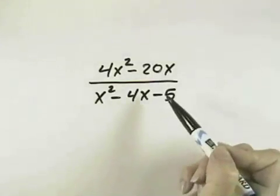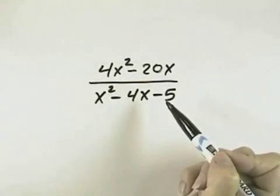In this problem, we want to simplify this rational expression. To do so, we can only cancel like factors.